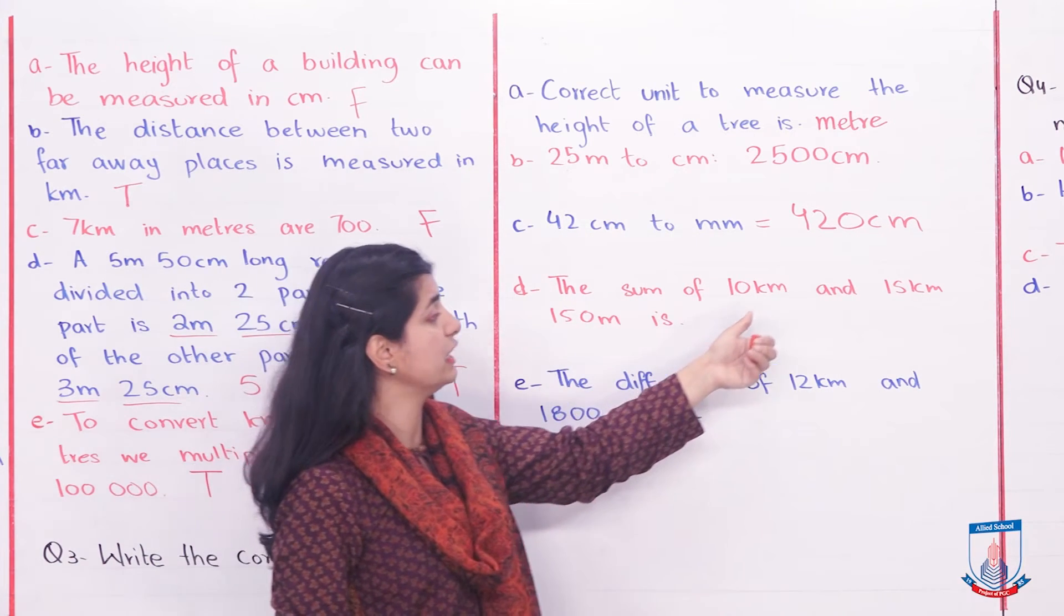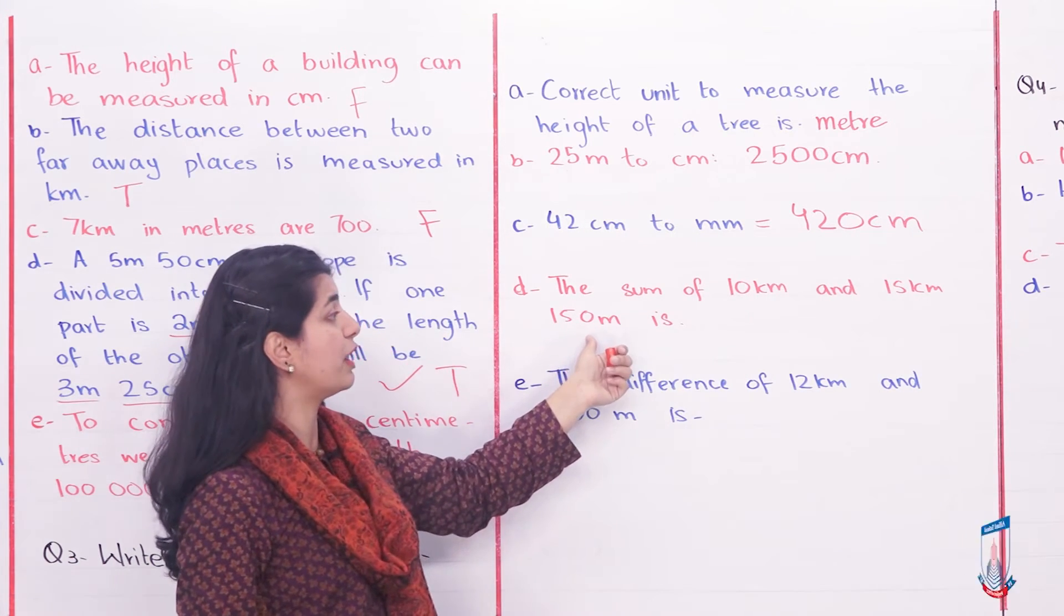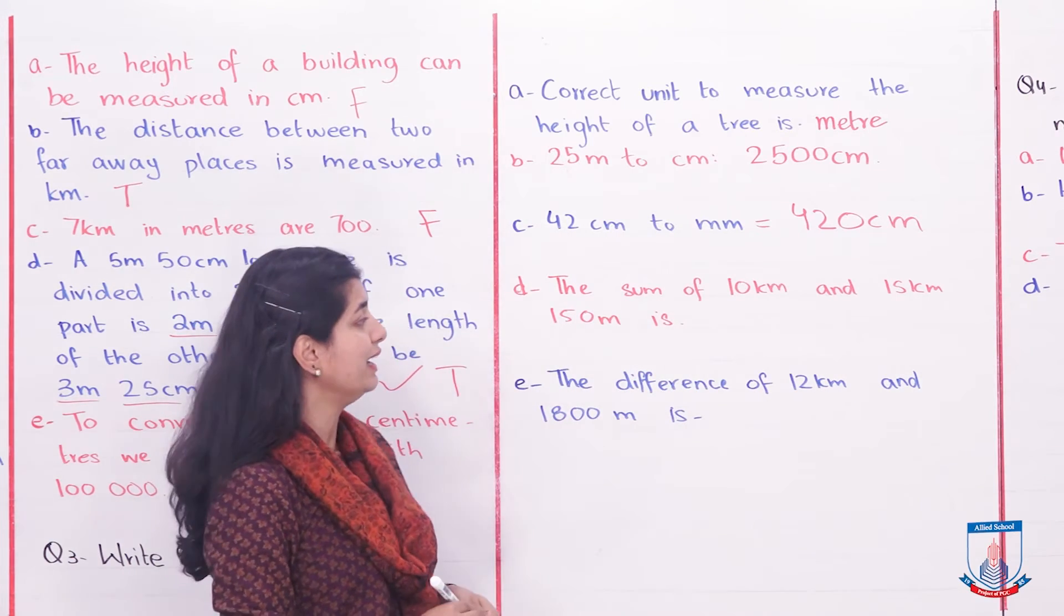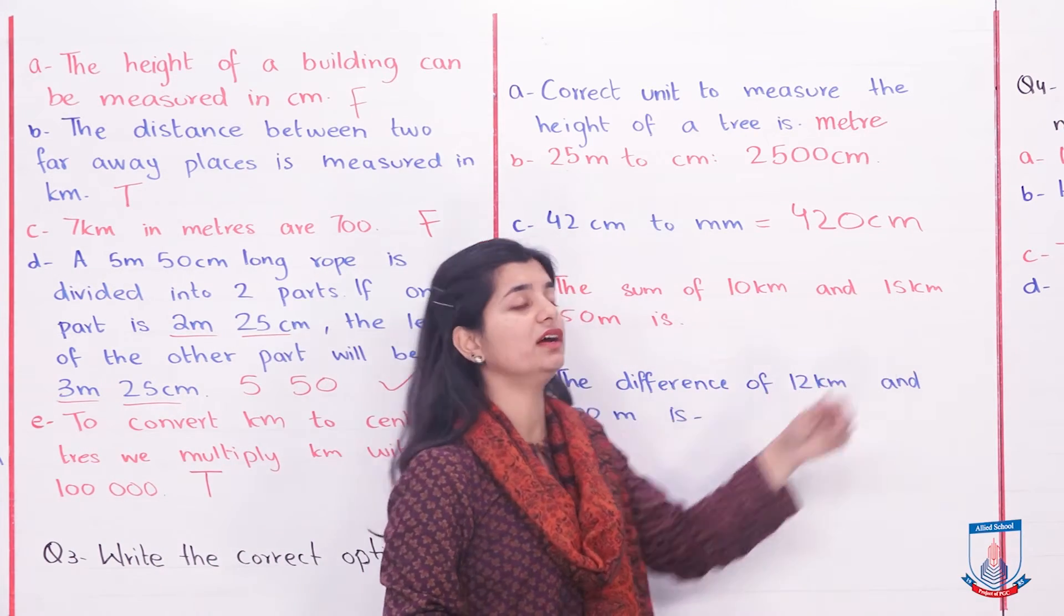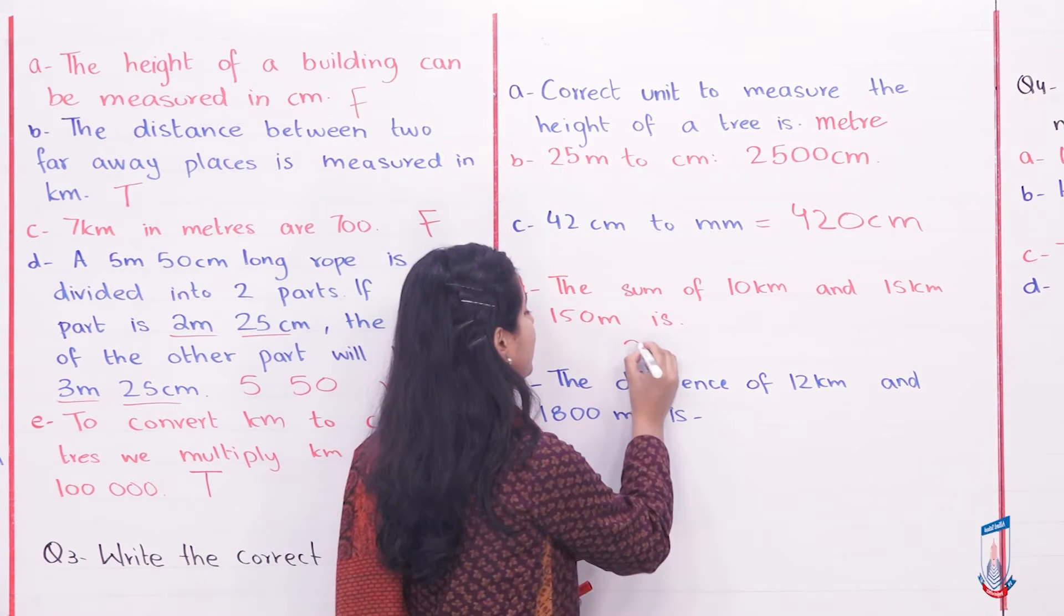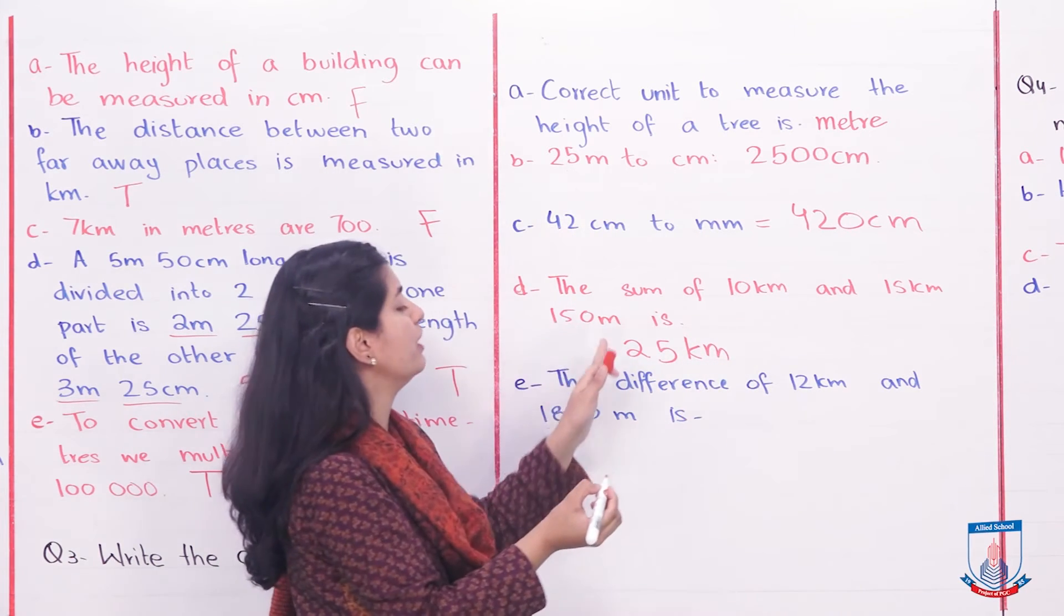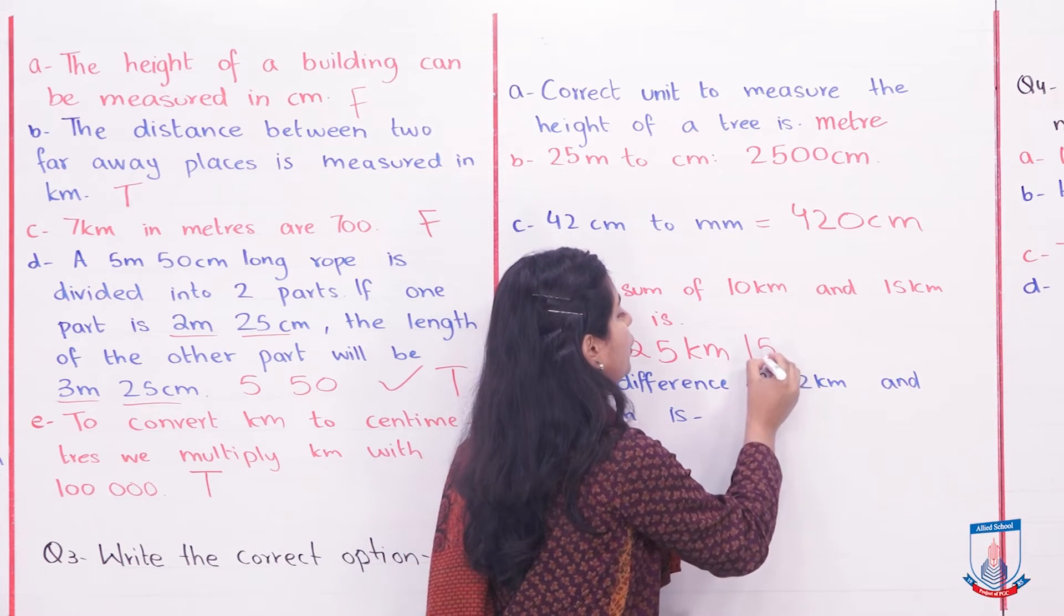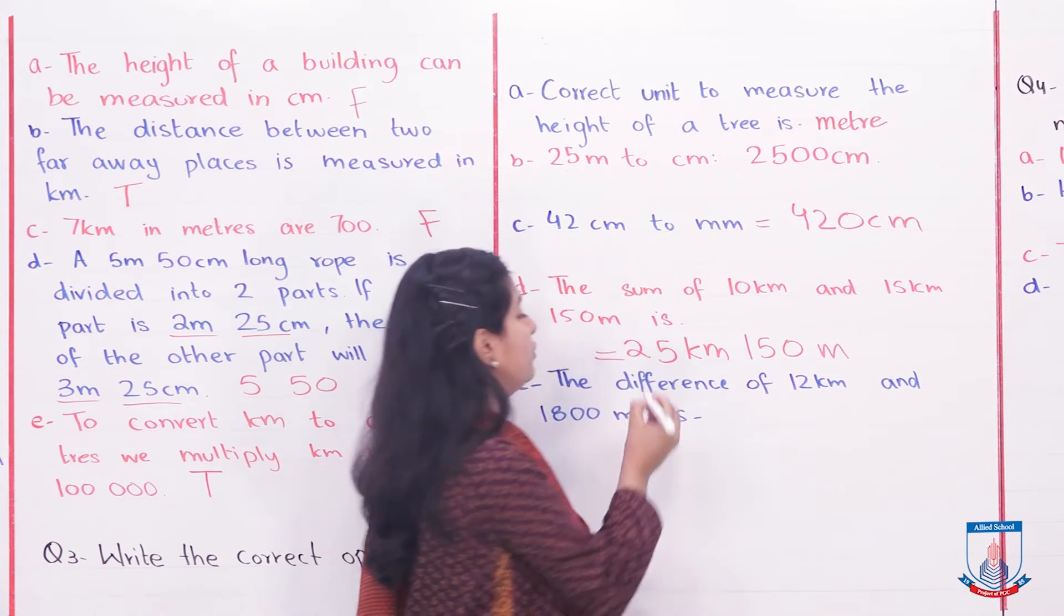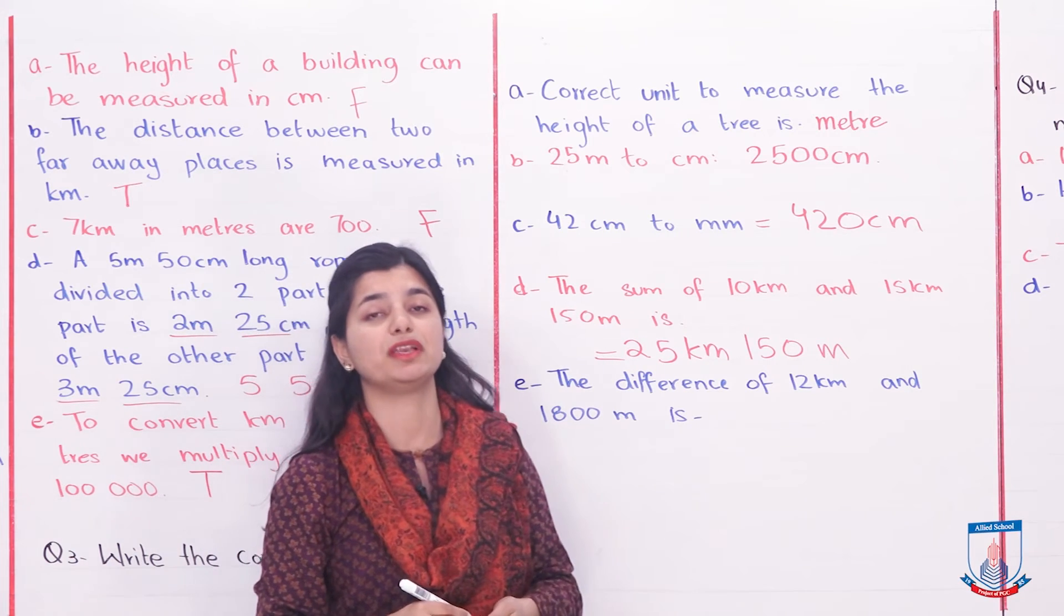Part D: The sum of 10 kilometers and 15 kilometers 150 meters. When you add them, 10 and 15 is 25. So we will have 25 kilometers and 150 meters. The correct option is 25 kilometers 150 meters.